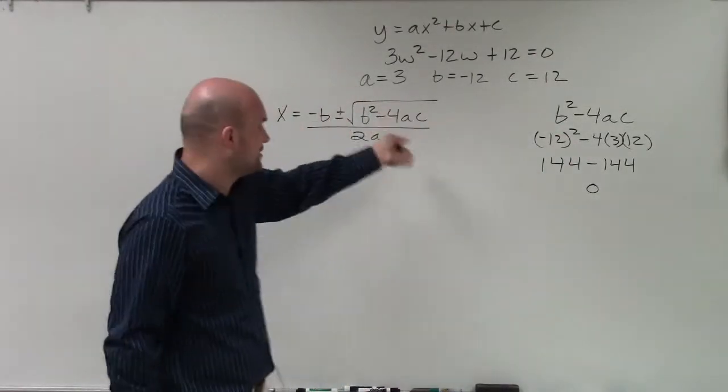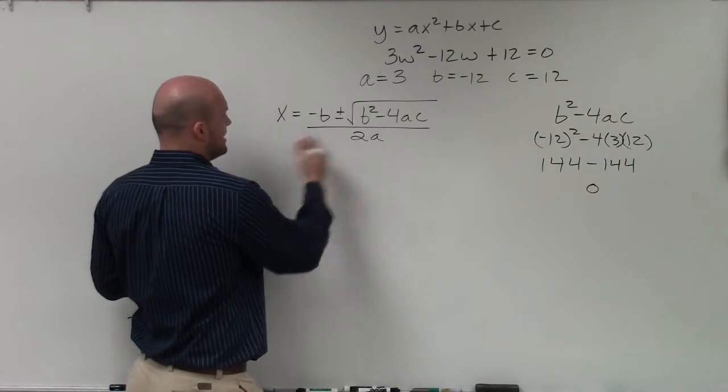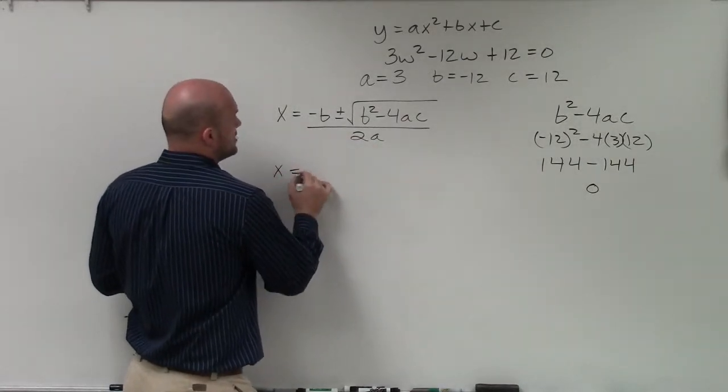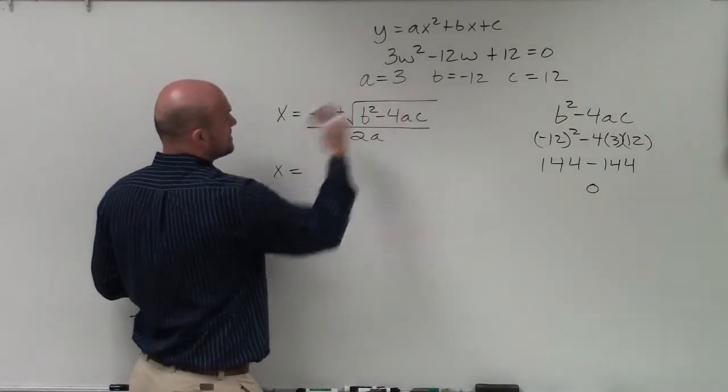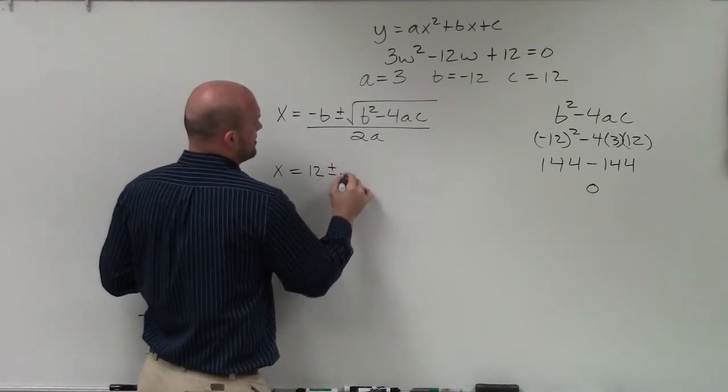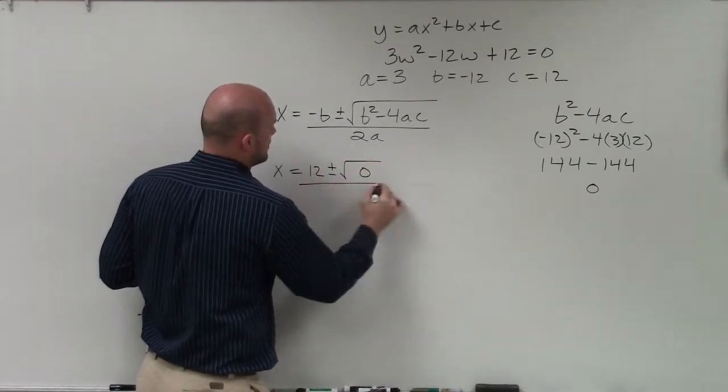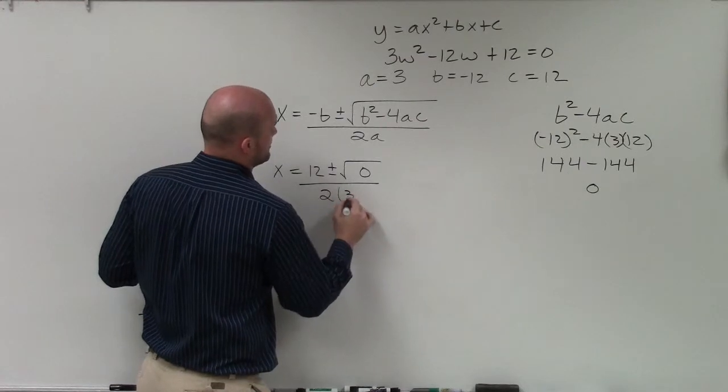So now I'm going to have 0 as my discriminant, and I'm just going to plug in the remaining values. x equals opposite of b, so since it's opposite of -12, it's going to be positive 12, plus or minus the square root of 0, all divided by 2 times 3.